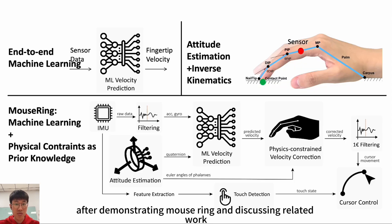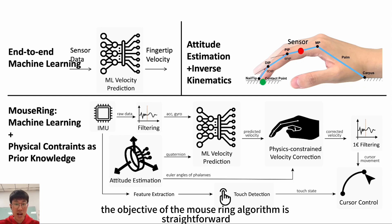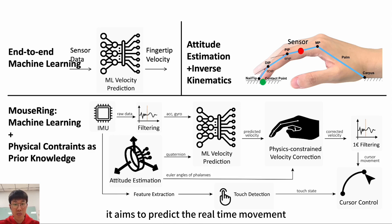After demonstrating MouseRing and discussing related work, I will now explain how the MouseRing algorithm works. To enable continuous cursor control, the objective of the MouseRing algorithm is straightforward. It aims to predict the real-time movement speed of the index fingertip through IMU sensing. We can employ a simple approach that predicts the real-time velocity of the fingertip, accumulates these velocities, and finally updates the sliding trajectory in real-time.